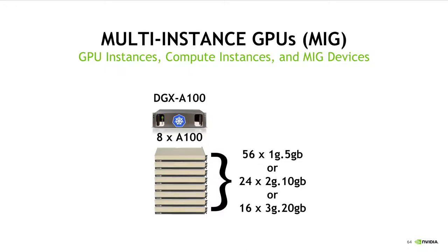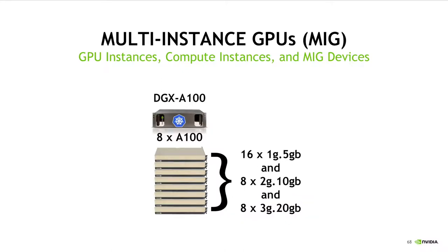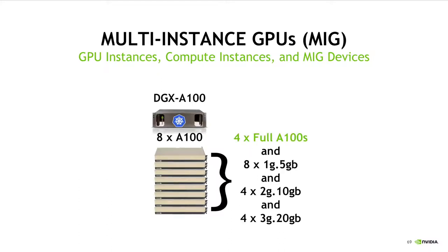Striping a single device type across all GPUs turns an 8-GPU DGXA100, for example, into either 56 1G.5GB devices, 24 2G.10GB devices, or 16 3G.20GB devices. However, it's not uncommon to also see a configuration where a single node has a good mix of different device types, or where some GPUs are not configured for MIG at all and some are. It really just depends on your particular cluster configuration and how many nodes you have at your disposal to decide which configuration is best for you.